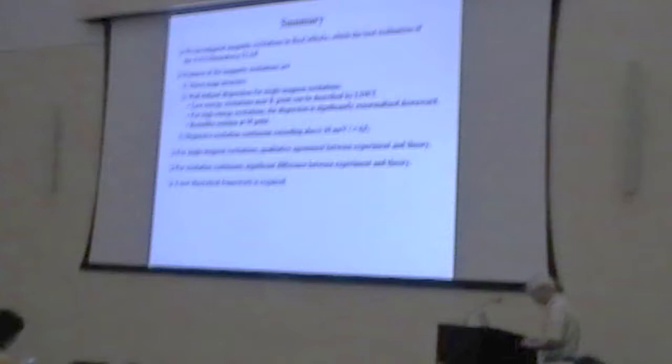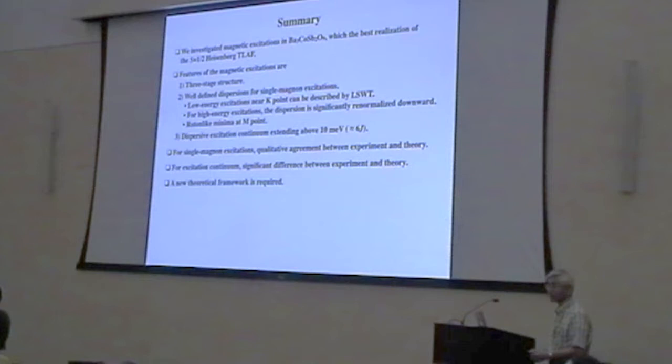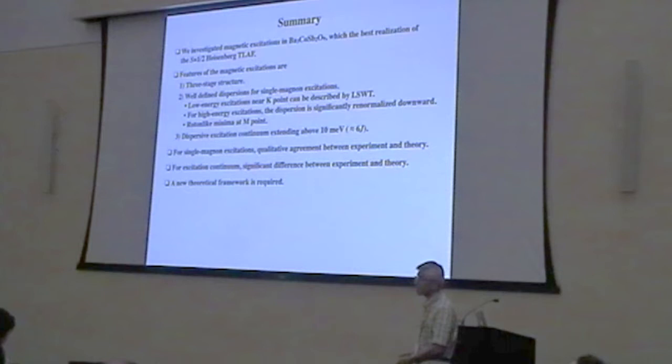Thank you. Do you have any questions? You showed us the data of the single magnon. What was the energy scale at the height at the top of one magnon? At the top, yes. And this 6J would require how many meV? 6J is about 30 meV.